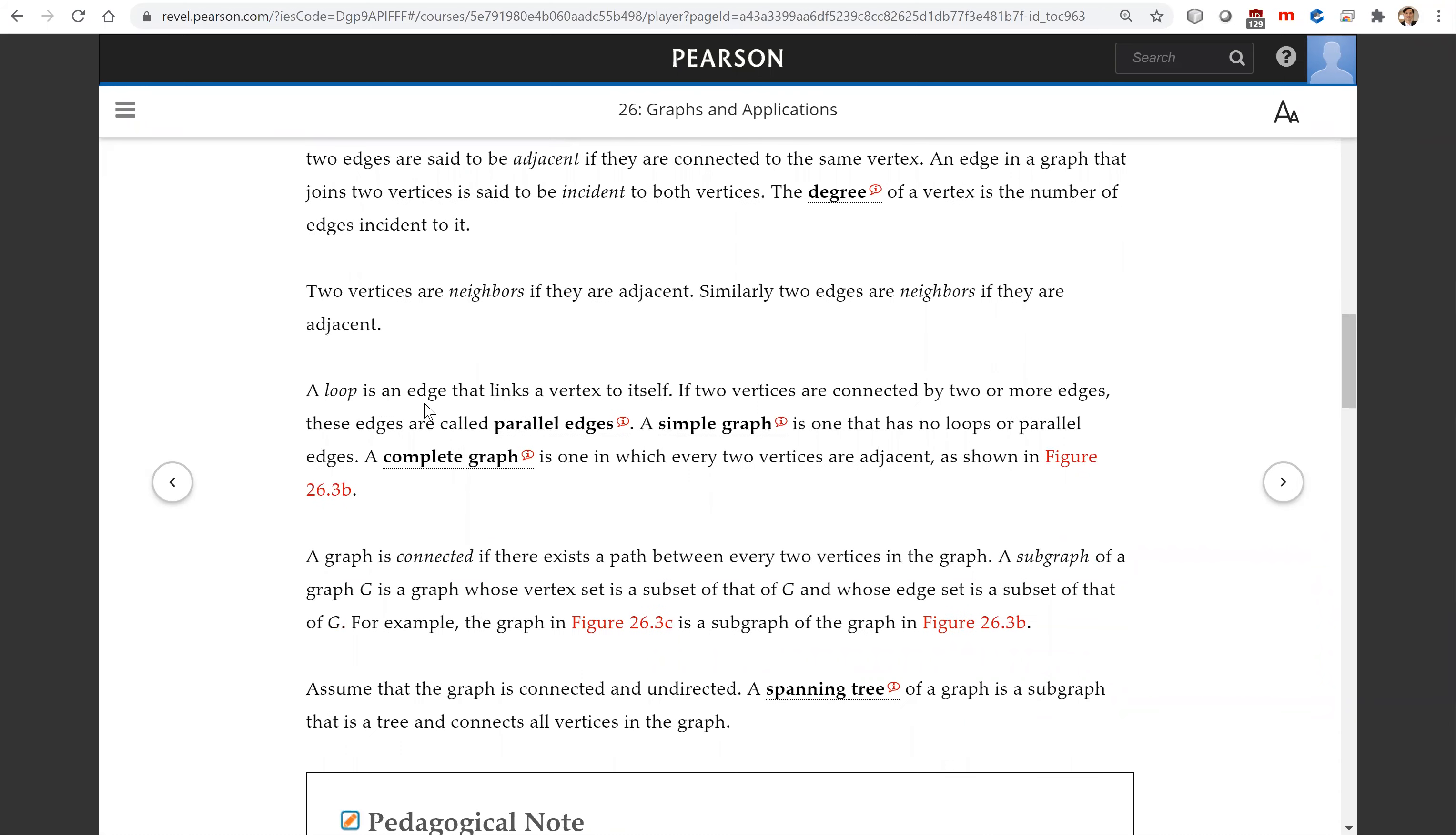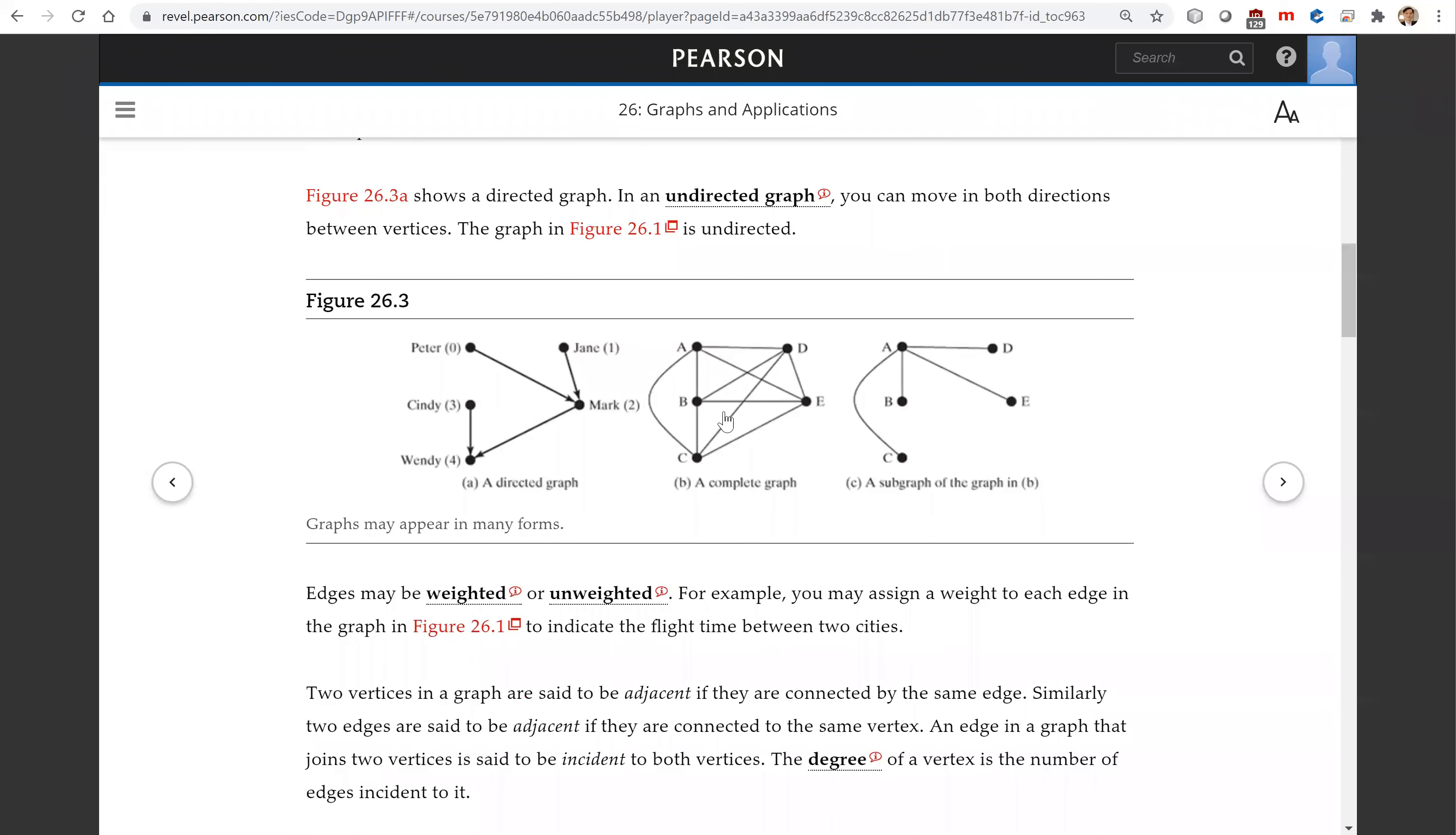A loop is an edge that links a vertex to itself. If two vertices are connected by two or more edges, these edges are called parallel edges. A simple graph is one that has no loops or parallel edges. A complete graph is one in which every two vertices are adjacent. As shown in this example, this is a complete graph, so every two vertices are adjacent.